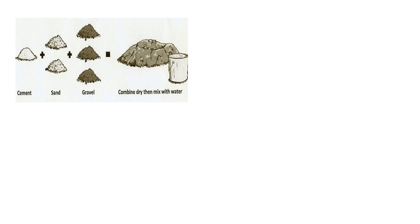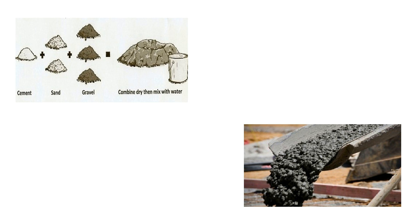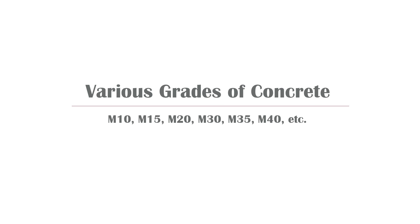We all know that on mixing cement with sand, aggregates, and water, a paste will form which can be used to bind the building materials together. This paste is also called concrete. The strength of this concrete mix is determined by the proportion in which cement, sand, and aggregates are mixed. There are various grades of concrete available in the market based on these ratios.